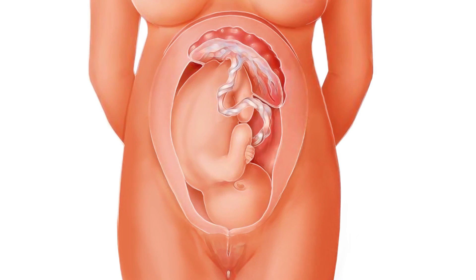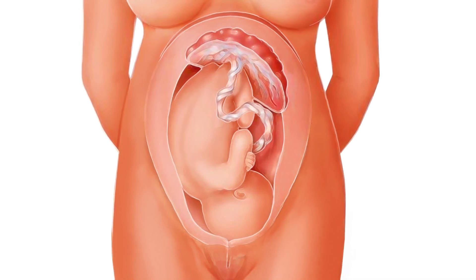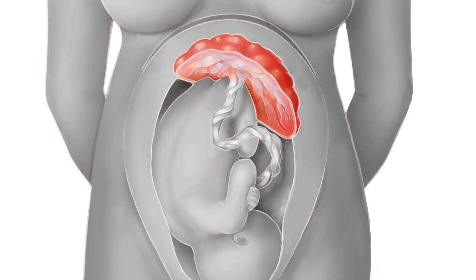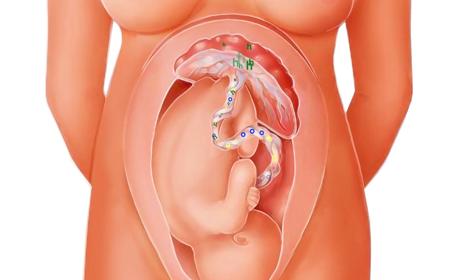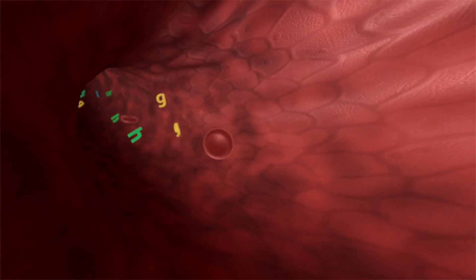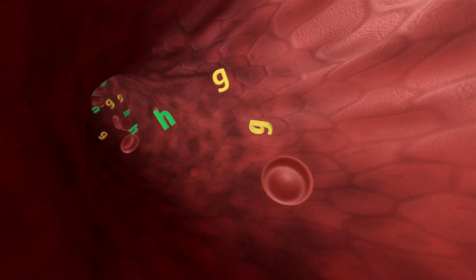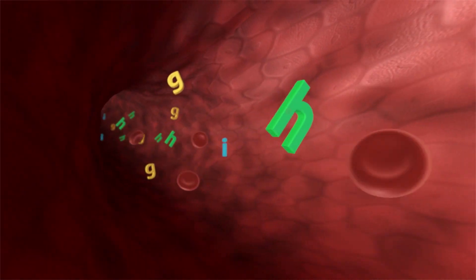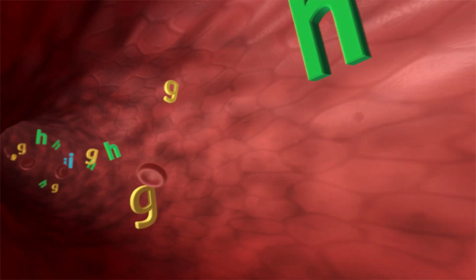You may have recently been diagnosed with gestational diabetes. The following information will explain why this is happening. The placenta is an important organ during pregnancy that allows oxygen and food to pass from you to your baby. The placenta produces hormones that help your baby to grow and develop. These hormones also interfere with the action of the mother's insulin, leading to insulin resistance.